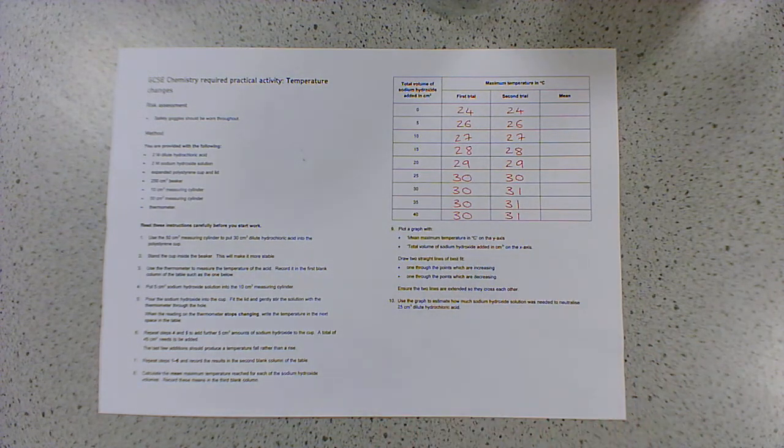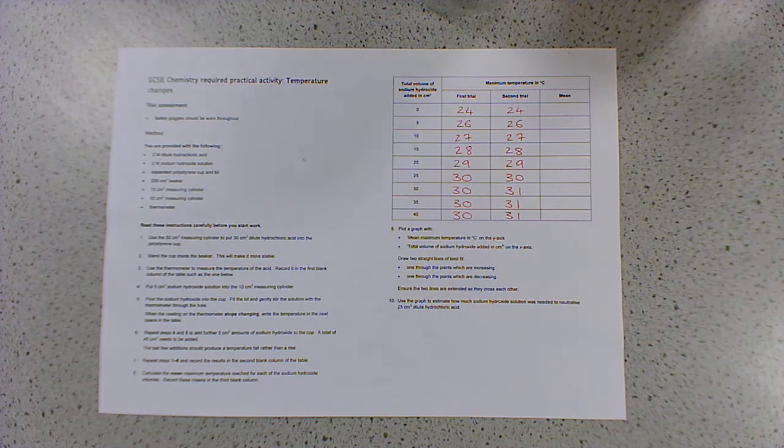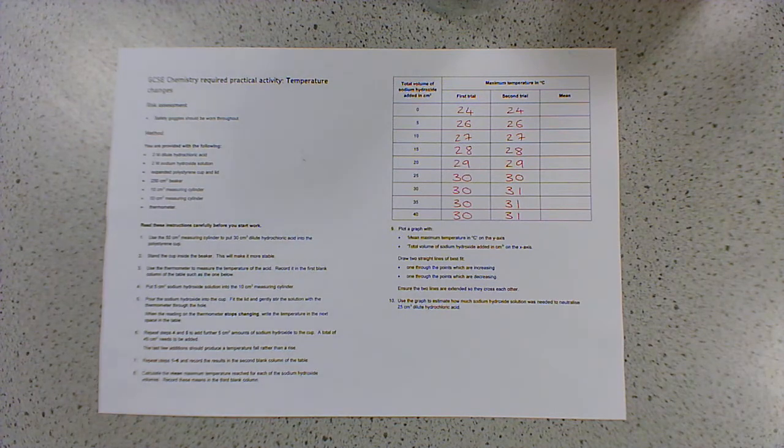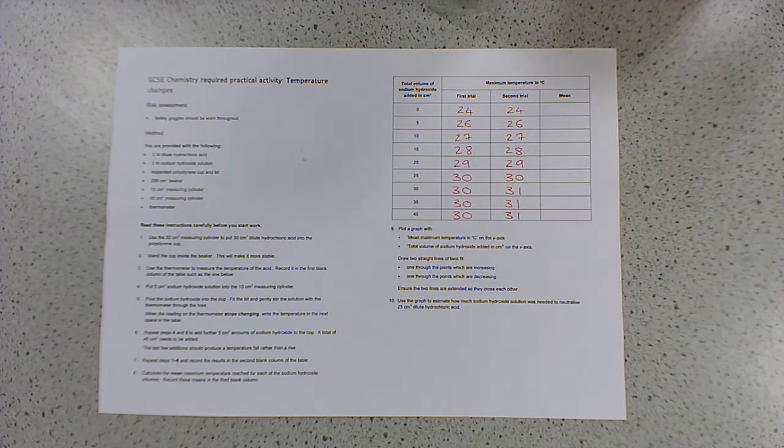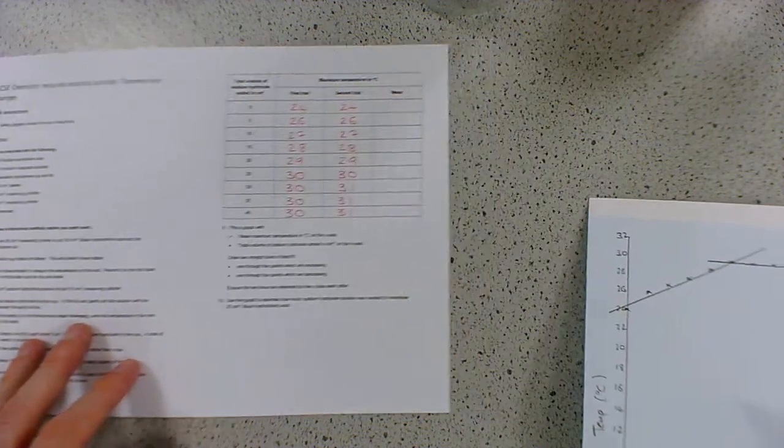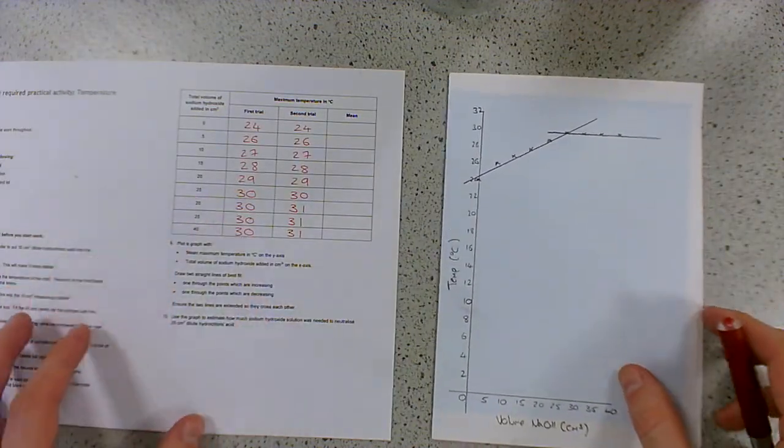Now, this is quite a unique graph, because it says here, draw two straight lines of best fit. Now, you're very rarely asked to draw two lines of best fit. It's almost always going to be in the context of this kind of question, where you're using temperature changes to work out what we call point of neutralisation. So what's going to happen is you're going to plot it, and you're going to end up with a graph that looks remarkably similar to this. I'll leave the results there. So make a note of these results, because you're going to need them.